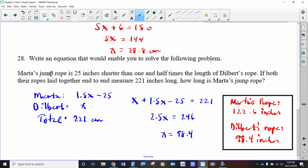And we do the same thing for MARTA's jump rope, MARTA and Dilbert's. Now, this is where it gets a little tricky. Instead of it being like two times or three times, it's one and a half times. So if Dilbert's is X, then MARTA's is 25 inches shorter than one and a half times X. So the combined total is 221. So you add this to this, combine like terms, add 25 to each side, then divide at the end by 2.5, and you will get the answer for X, which is Dilbert's rope.